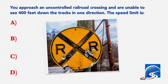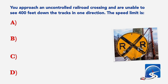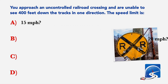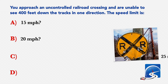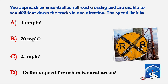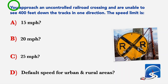You approach an uncontrolled railway crossing and are unable to see 400 feet down the tracks in one direction. The speed limit is: A: 15 miles per hour. B: 20 miles per hour. C: 25 miles per hour. D: Default speed for urban and rural areas. Correct answer A: 15 miles per hour.